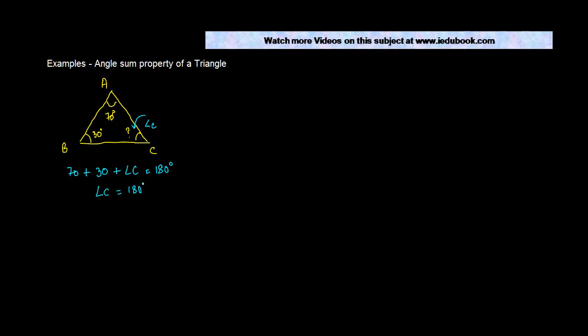In other words, angle C can be written as 180 degrees minus 70 minus 30, or angle C is equal to 180 minus 100, which equals 80 degrees. So this was one of the simplest ones.